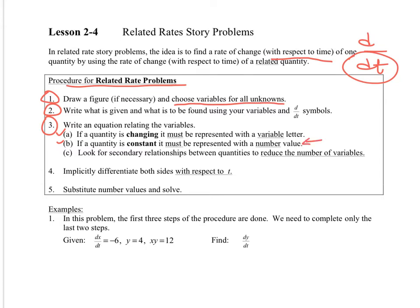These are key, though. Now, if a quantity is changing, it must be represented with a variable. If you have something that is not changing, it's a constant, it must be represented with a number value. Well, must might be a little strong here, because when you do the derivative, the rate of change will be zero. That thing is not changing, so you could keep it as a variable. It's a lot easier, though, if you do put it as a constant. Look for secondary relationships to reduce the number of variables. That always makes it a lot easier. You can avoid product and quotient rules, which saves you some bad stuff going on. Then four, implicit differentiate both sides with respect to t. And then five, substitute number values and solve.